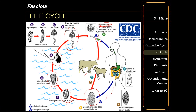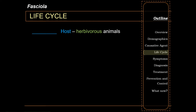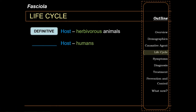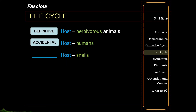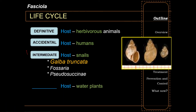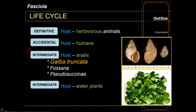Aside from humans, Fasciola also undergoes its complete life cycle in cattle, sheep, and sometimes camels. Quick quiz: herbivores are the definitive hosts for Fasciola. Humans are technically also definitive hosts but are considered accidental hosts, as Fasciola is still a zoonotic disease. Snails are the first intermediate host — specifically species such as Galba truncatula, Fossaria, and Pseudosuccinea. Water plants — including watercress and sometimes water lilies — are the second intermediate host.